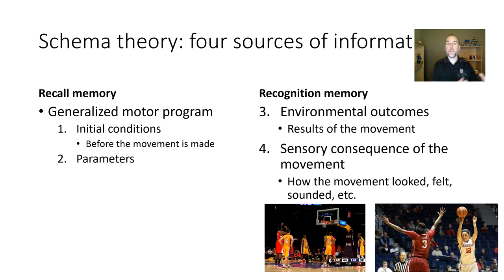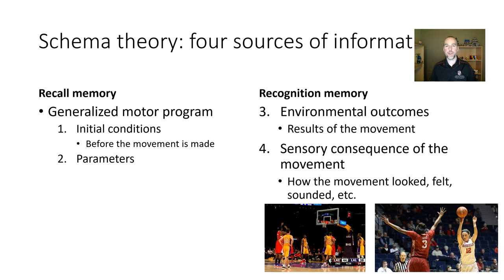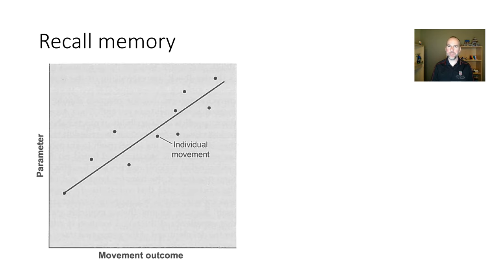There are two types of feedback that inform recognition memory. First, environmental outcomes — the result of the movement, such as a baseball's flight path or whether a free throw goes in. Second, sensory consequences — how the movement felt. In basketball, experienced players can tell immediately whether a shot is good based on feel alone, before seeing the outcome. In baseball or tennis, hitting the ball on the sweet spot of the bat or racket produces a distinctive sound — recognition memory uses these cues to evaluate movement quality.